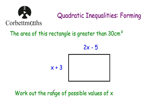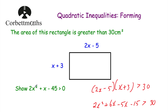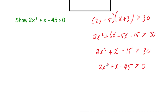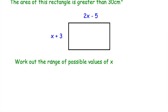We've been asked to work out the range of possible values of x. Going back, we have 2x squared plus x minus 45 is greater than 0. Let's solve this quadratic inequality and find the possible values of x.